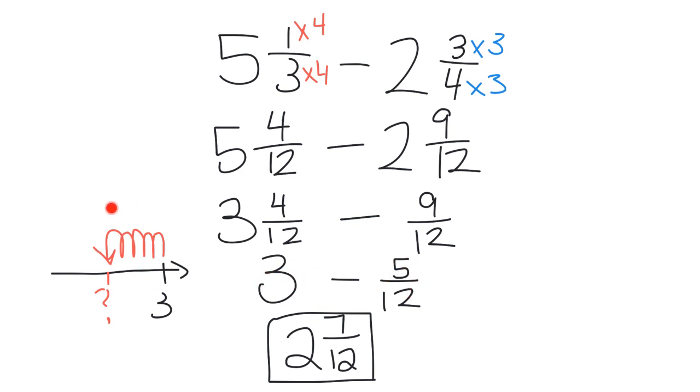if being able to just visualize jumping backwards is a little difficult. The student might think of this 3 as 2 and 12 twelfths, and then when we go backwards 5 twelfths, it might become a little bit easier to see that the result is 2 and 7 twelfths.